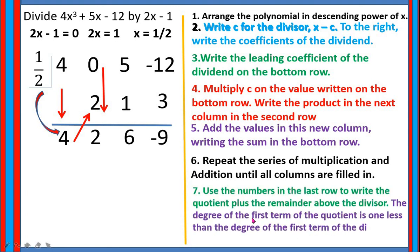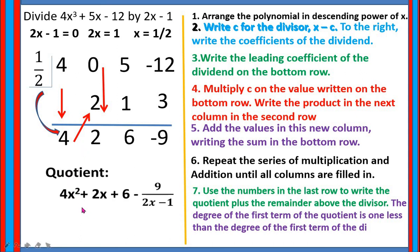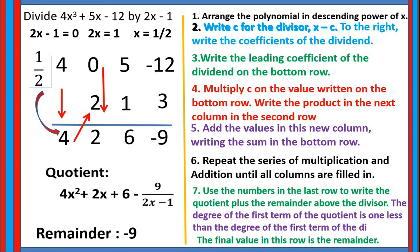Use the numbers in the last row to write the quotient plus the remainder above the divisor. The degree of the first term of the quotient is 1 less than the degree of the dividend, so we have 4x squared plus 2x plus 6, with a remainder of negative 9 over 2x minus 1. The remainder is negative 9. Thank you for watching and learning with me.